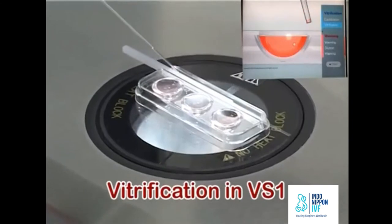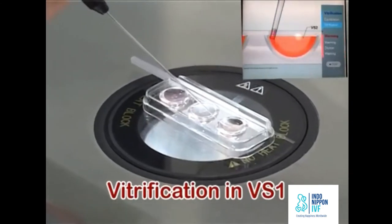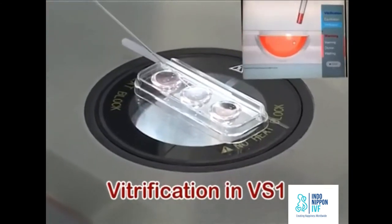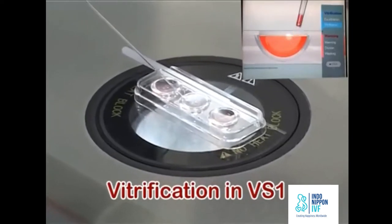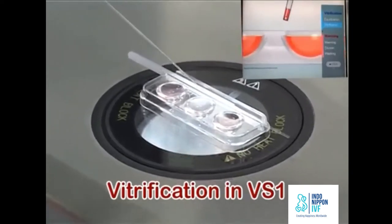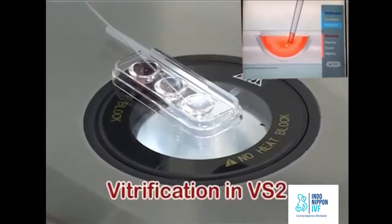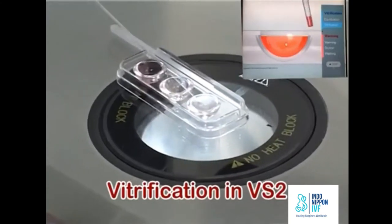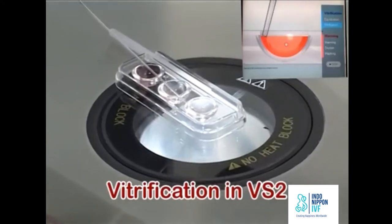Discard the remaining VS-1 and aspirate fresh VS-2. Aspirate oocyte at the tip of the pipette. This entire step in VS-1 should be completed within 30 to 40 seconds. Transfer the oocyte to the middle depth of VS-2 with minimal amount of VS-1. Discard the remaining VS and aspirate fresh VS-2.